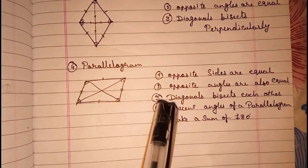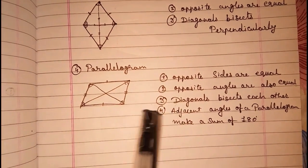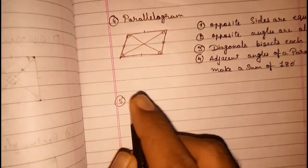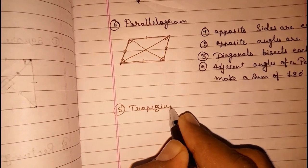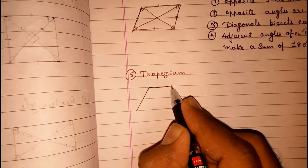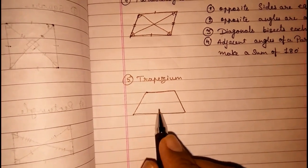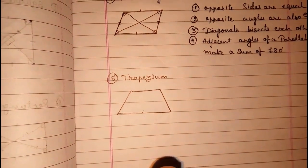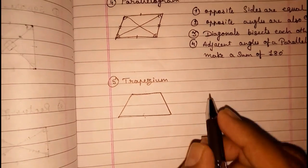This is the most important type of quadrilateral and we have to study it in detail. The fifth type is trapezium. This is also important. It has only one property: only one pair of opposite sides is parallel — nothing else. In this quadrilateral, only one pair of opposite sides is parallel.